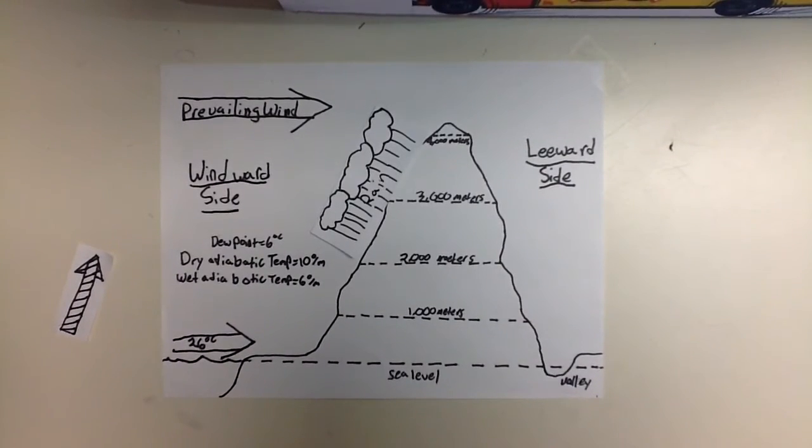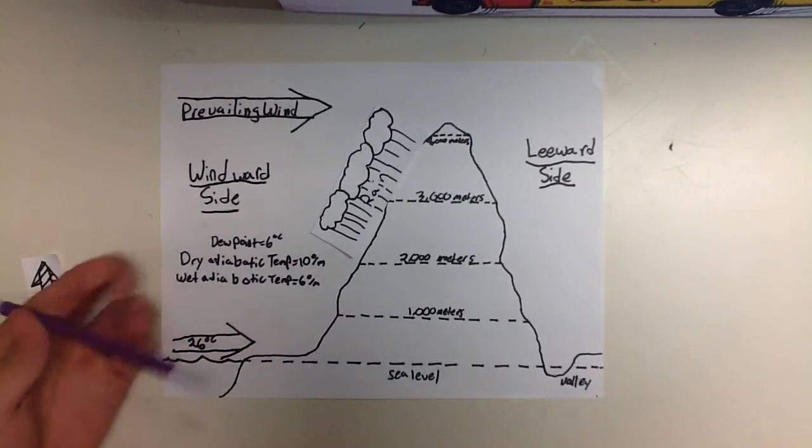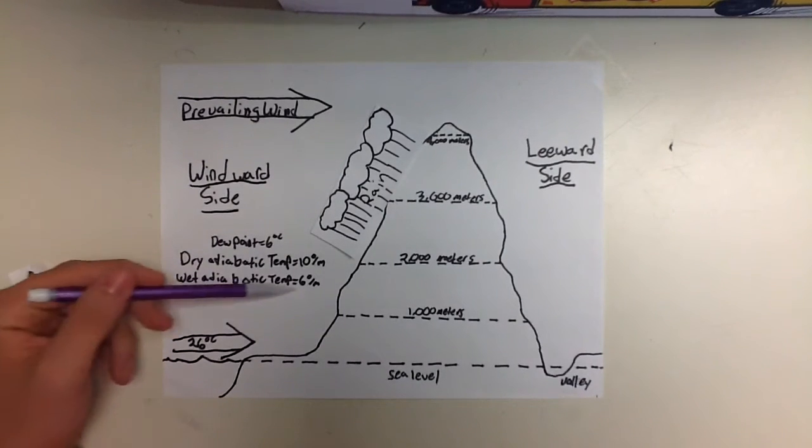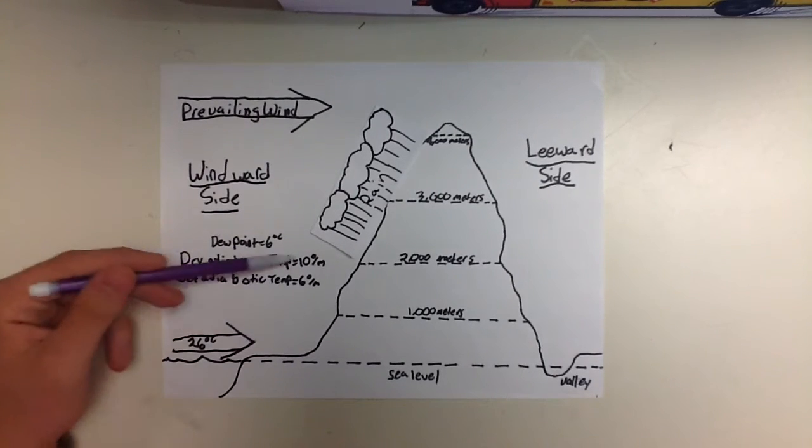Adiabatic temperature change is when air spreads out to the low pressure at high elevations. A dry adiabatic lapse rate is descending 10 degrees Celsius for every thousand meters you ascend. The wet adiabatic lapse rate, or the area of dew point temperature, descends 6 degrees Celsius for every thousand meters.